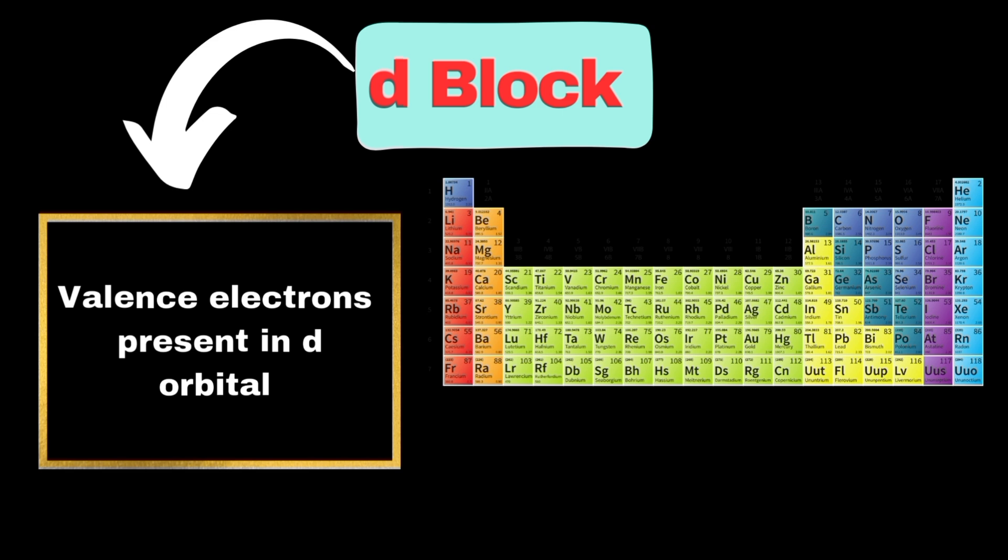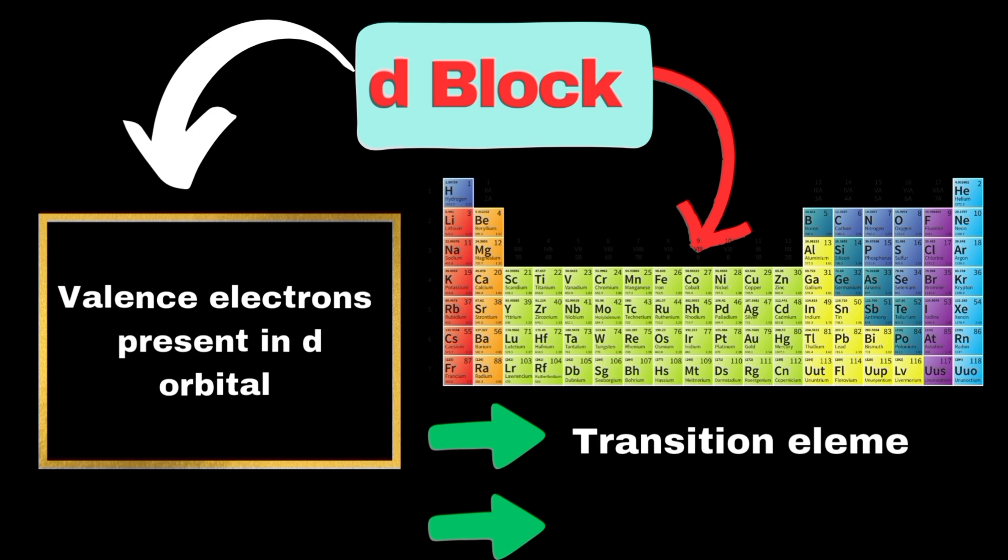Those elements, whose valence electrons are present in D orbital, are called D block elements, and they are located between S and P block elements. D block elements are also known as transition elements, because their properties are in transition between S and P block elements.